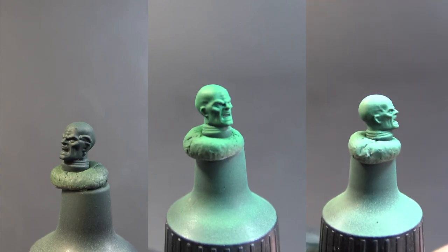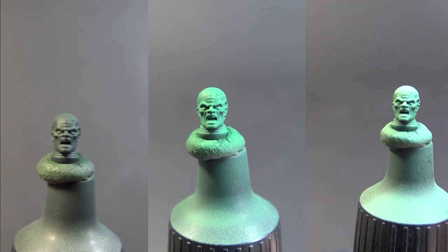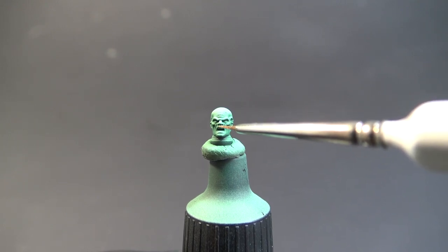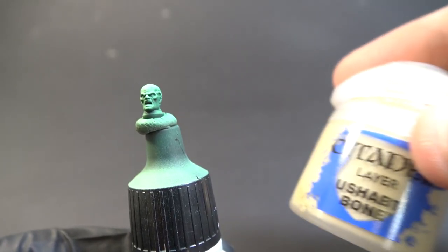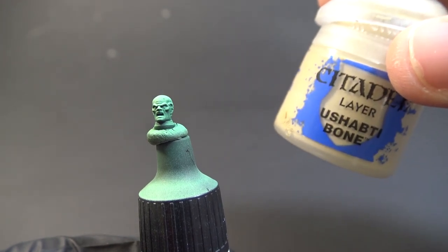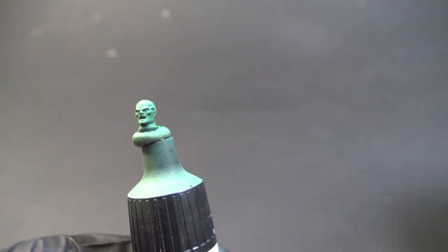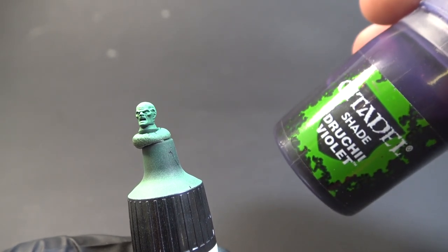There are no tricks. To this next stage you're just going to have to use a brush. I'm starting with his eyes and teeth. I'm using Ushabti Bone for that. And then I'm washing his mouth with Reikland Fleshshade. Then I'm washing eye sockets with Druchii Violet.